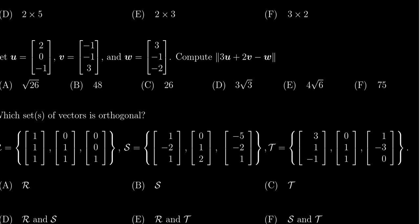If we compute that vector, 3u plus 2v minus w, this is going to equal: we multiply u by 3 to get [6, 0, -3]. We multiply v by 2 to get [-2, -2, 6]. And then we subtract w, so we get minus 3, plus 1, and plus 2.